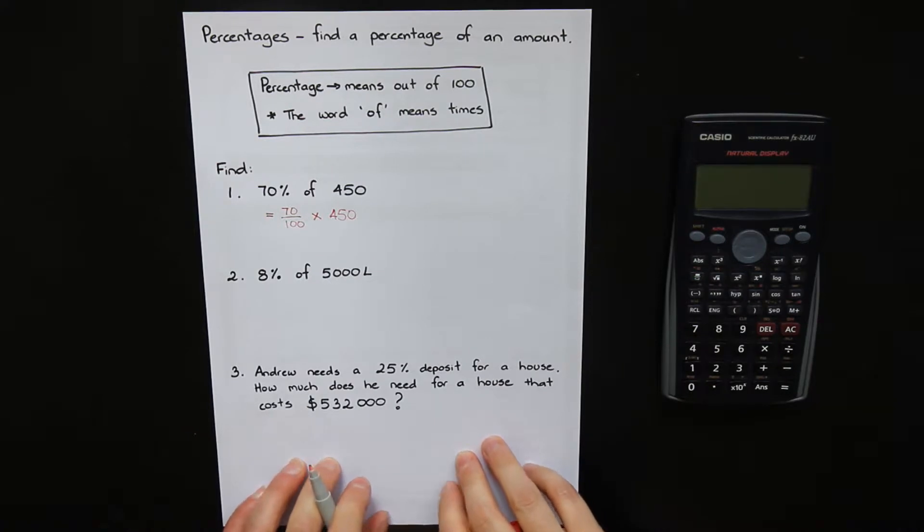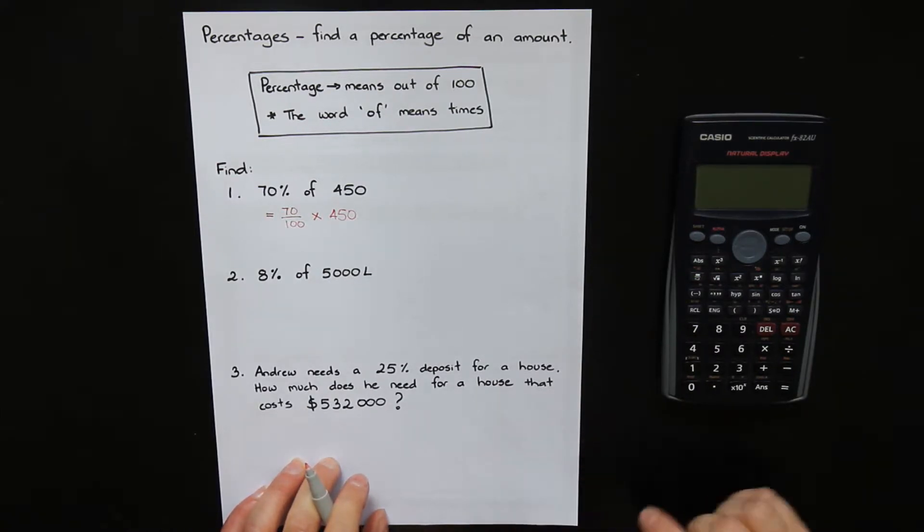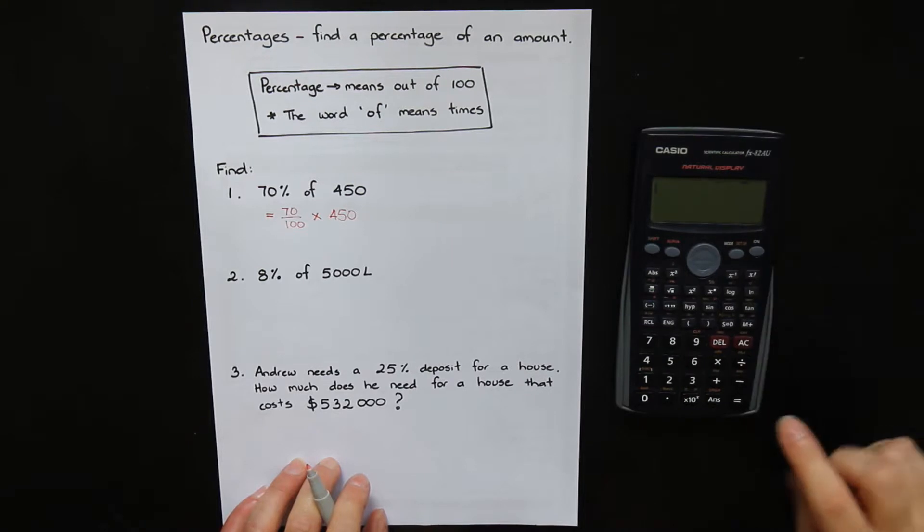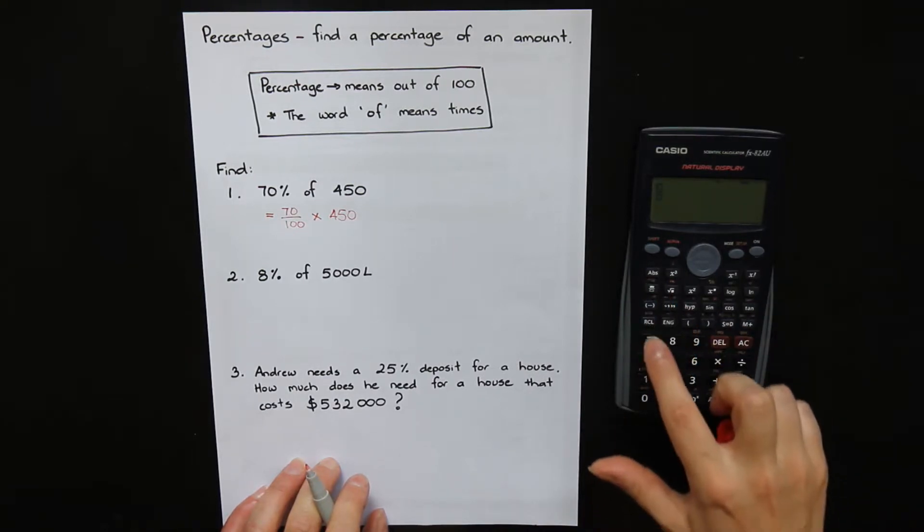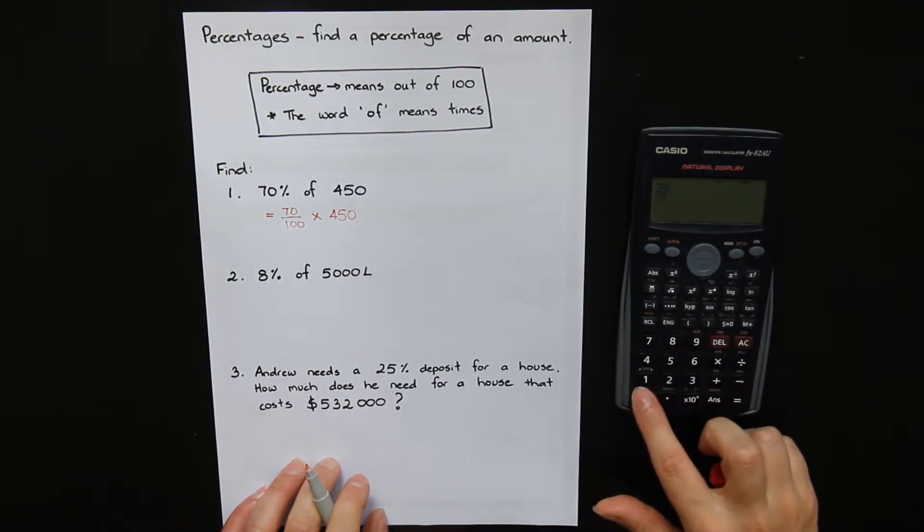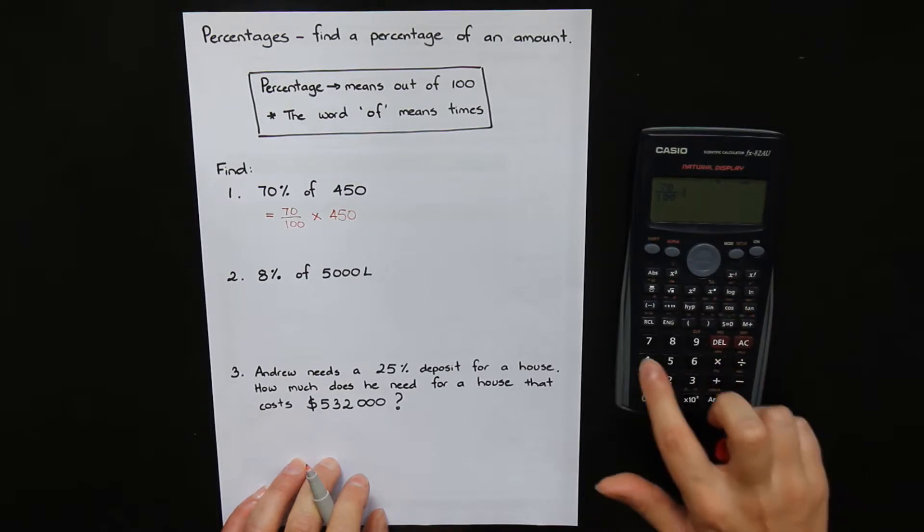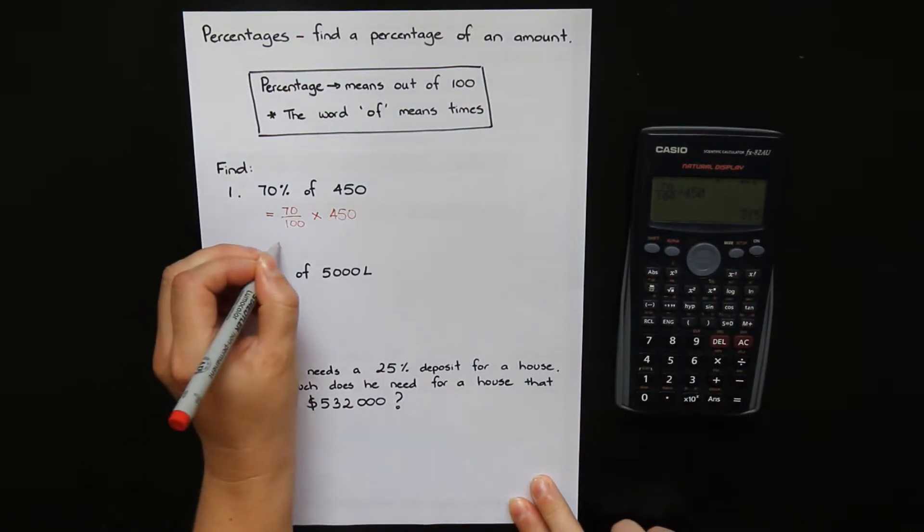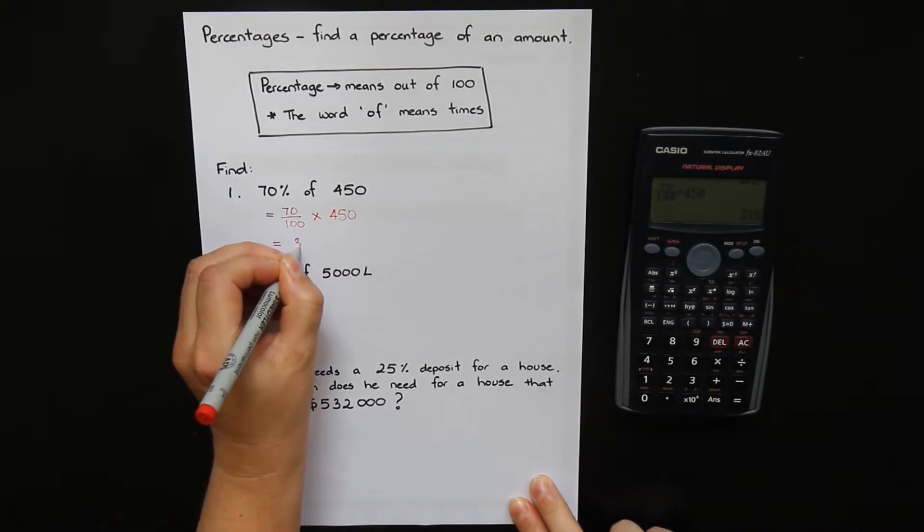Now just like last lesson, we're going to be doing our questions today with the calculator. Keep an eye out for my non-calculator videos coming soon. So on the calculator, type in 70 over 100 times by 450 equals 315.